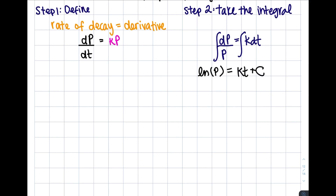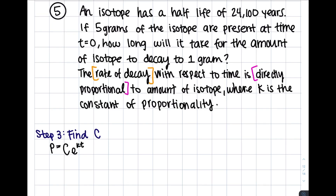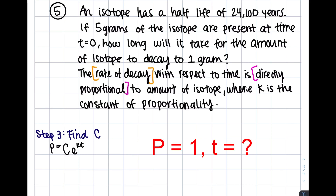Now that we're done taking the integral, we'll solve for p. To get p out of the natural log, we raise both sides to the exponential function of base e, since it's the inverse of natural log. We get p equals e to the kt times e to the c. Since e to the c is just a constant, we replace it with c, giving us p equals c times e to the kt. We need to find c and k before solving for t.